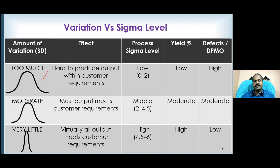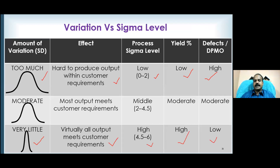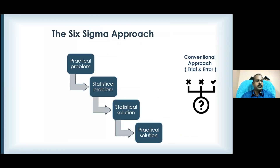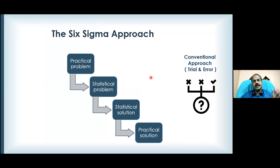By looking at the process, you can understand what it is capable of. Too much variation means a low sigma level, low yield, and very high defects. On the other hand, if your process is narrower and taller — like a giraffe — virtually everything you produce will meet the customer requirement. Sigma levels will be very high, yield will be high, and rejections very very low. Practical problems can be converted into statistical problems — the statistical solution is to reduce standard deviation and get the average on target.